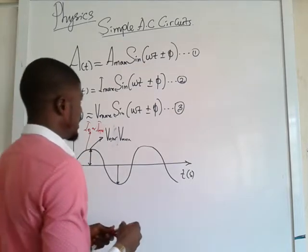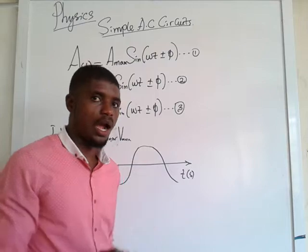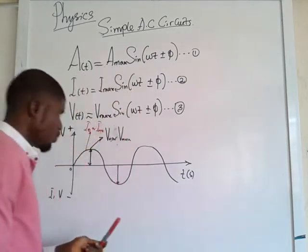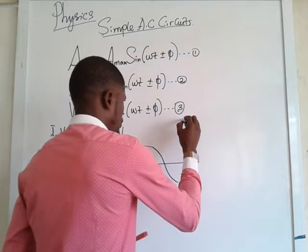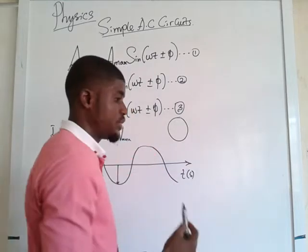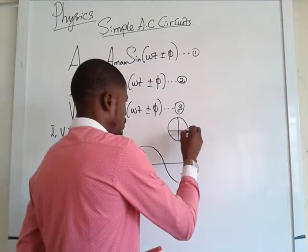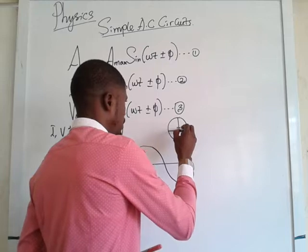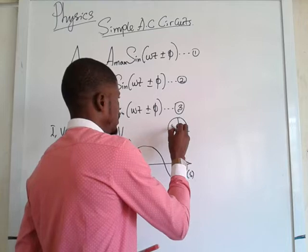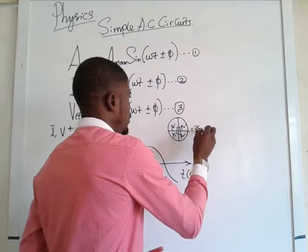I want to explain the meaning of ωT. Omega T in this equation simply means the phase angle, and φ means the phase difference. Suppose you draw a cycle — you divide this cycle into four quadrants. You know that you have 90°, 90°, 90°, 90°. And so 90° + 90° + 90° + 90° gives you 360°. That is what makes it a cycle.